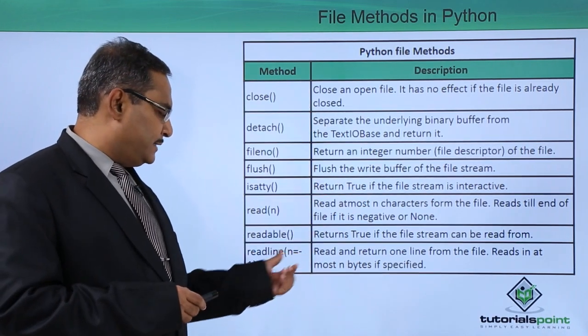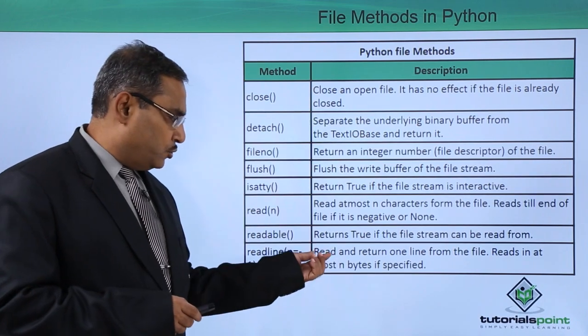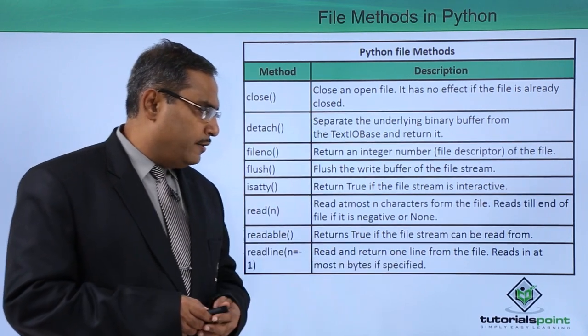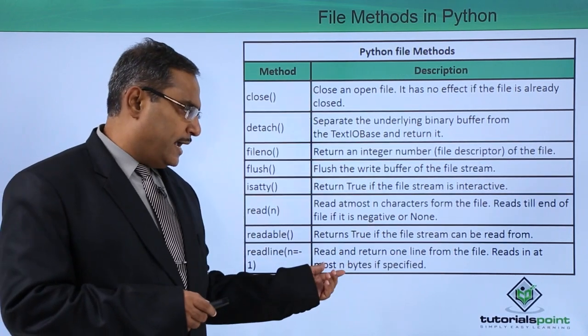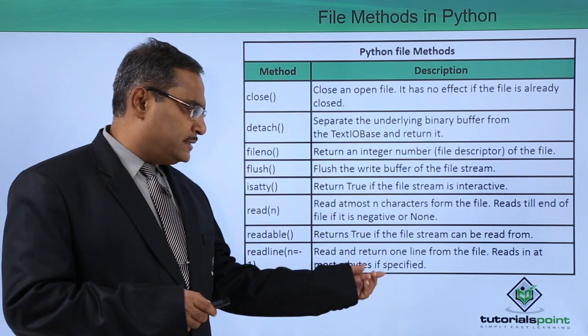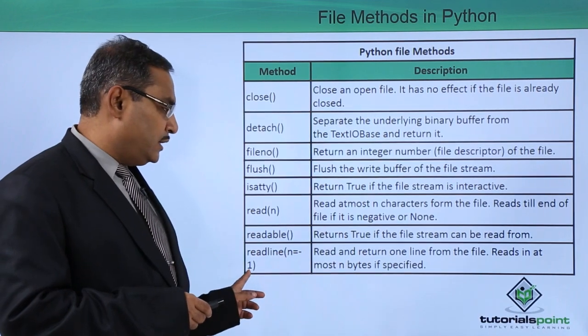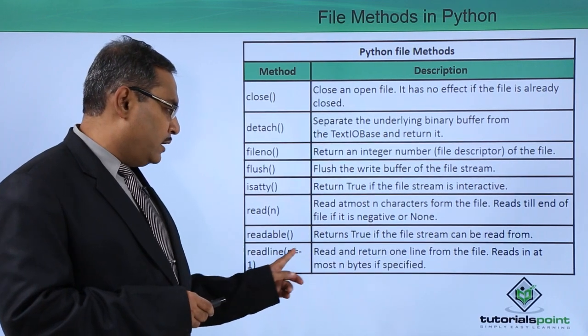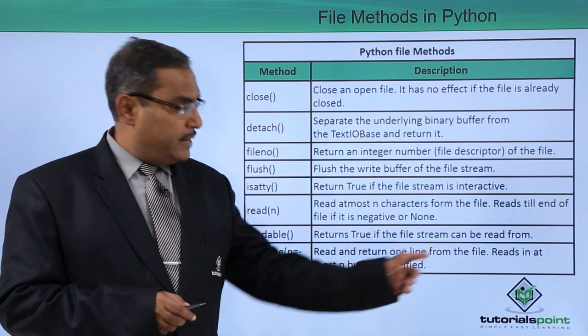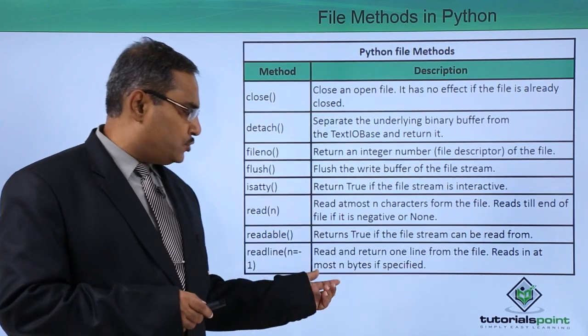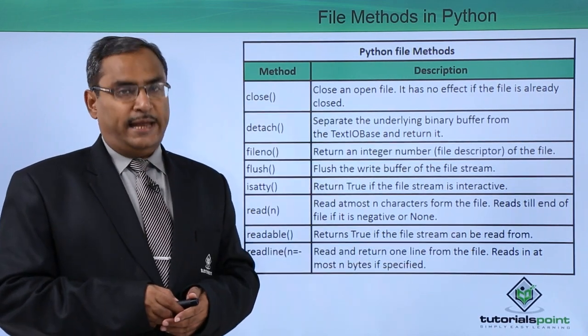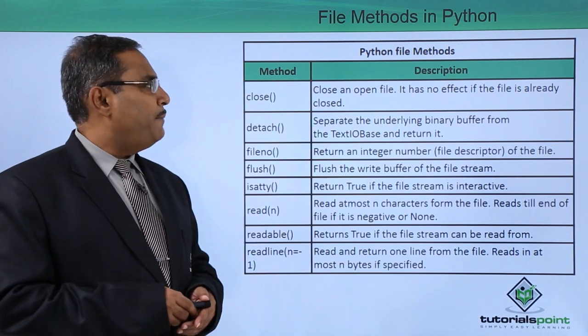Readline n equals minus 1 - read and return one line from the file and reads in at most n bytes if specified. The n bytes are there and this minus 1 is there. Read and return one line from the file and read in at most n bytes if the n is specified in the parameter.